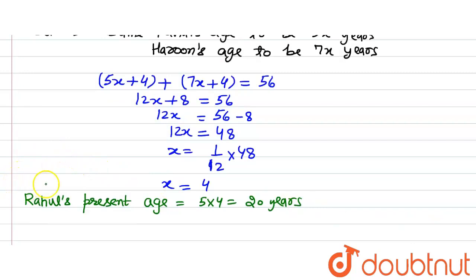Harun's age. So Harun's present age is equal to 7x, which means 7 multiplied by 4 is equal to 28 years. So this is our solution. Thank you.